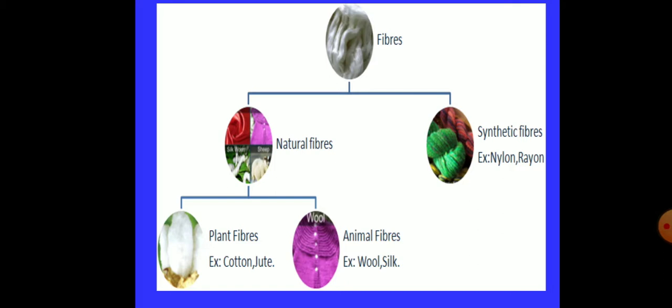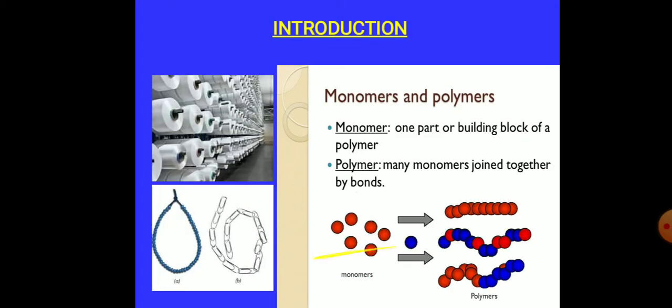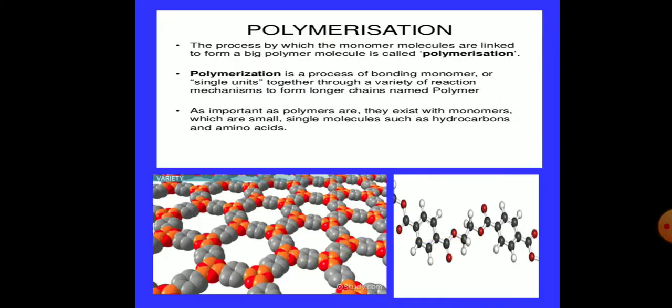But before starting synthetic fibers, we should know about monomers and polymers. What are monomers and polymers? You can see here small units are called monomers and the entire chain is called polymers. They join together and form particular substances. What is polymerization? The process by which the monomer molecules are linked to form a big polymer molecule is called polymerization.